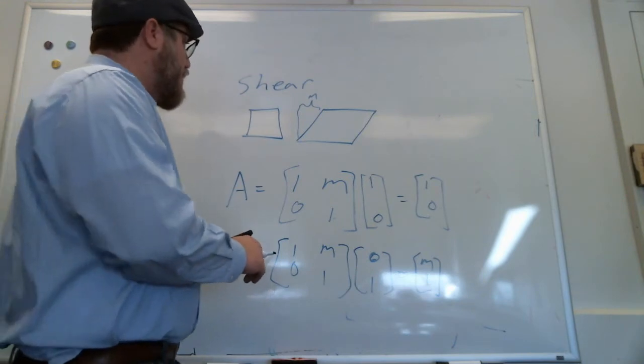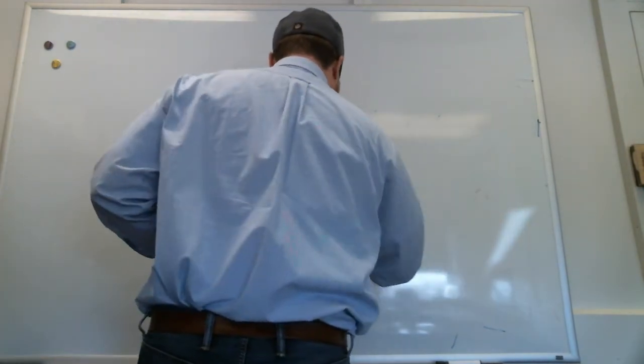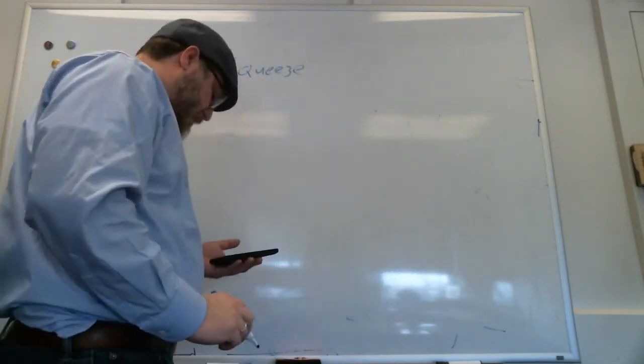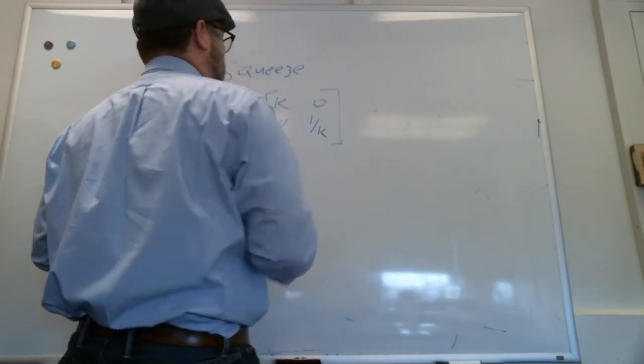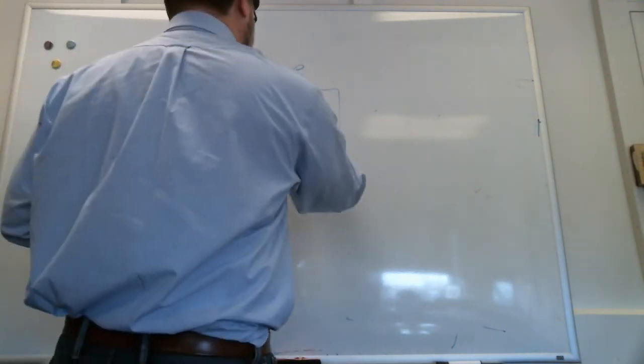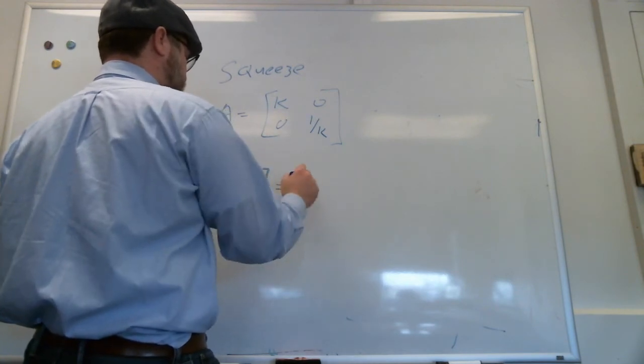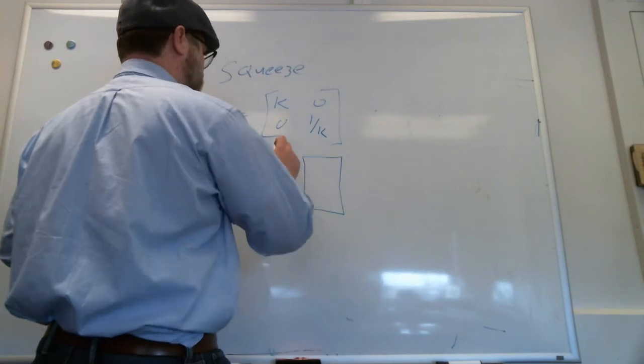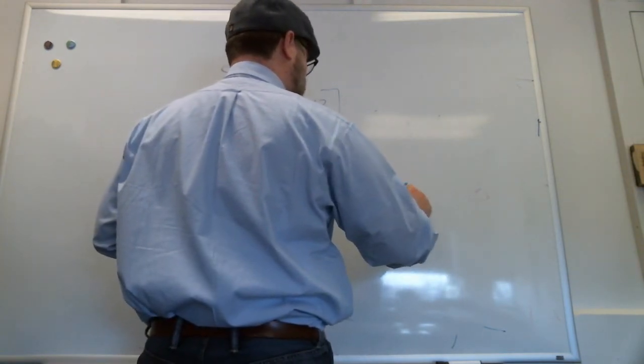So then there's two more that I want to talk about, actually three, but one we'll talk about because it's not strictly a linear transformation. All right. There is the squeeze mapping, which is a special kind of scaling. It's a special kind of scaling in that it's a volume conserving scaling. So we're going to expand by k, shrink by one over k so that the volume is conserved.